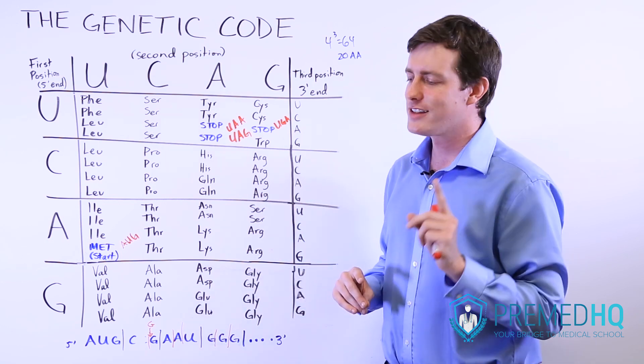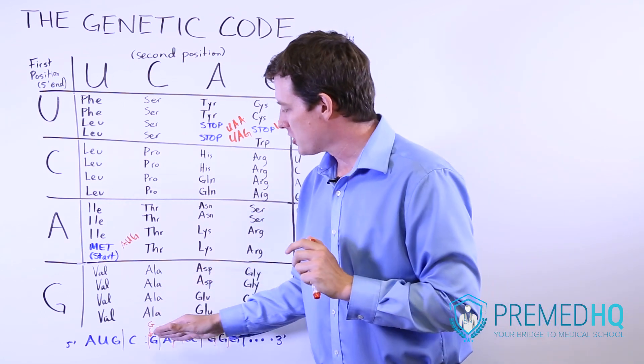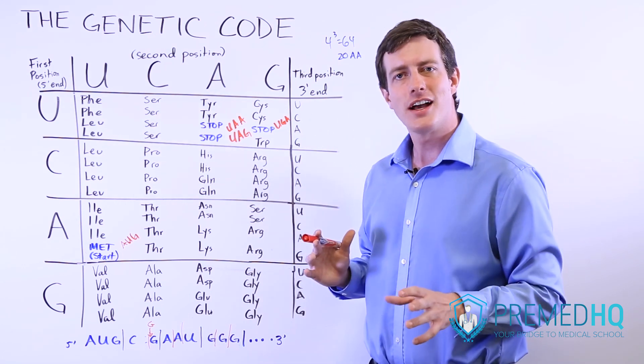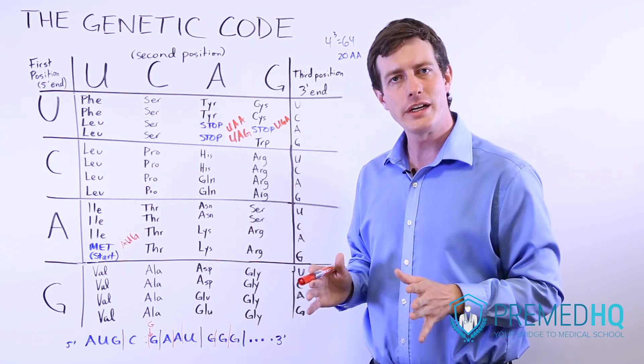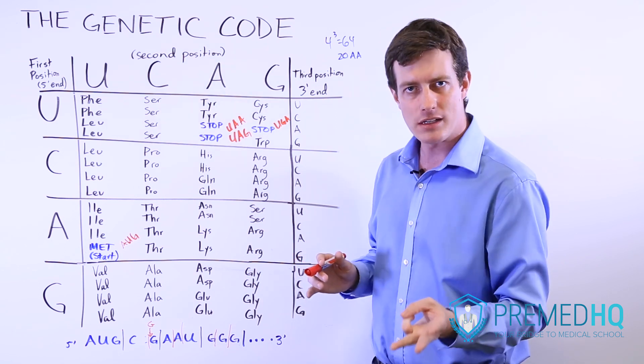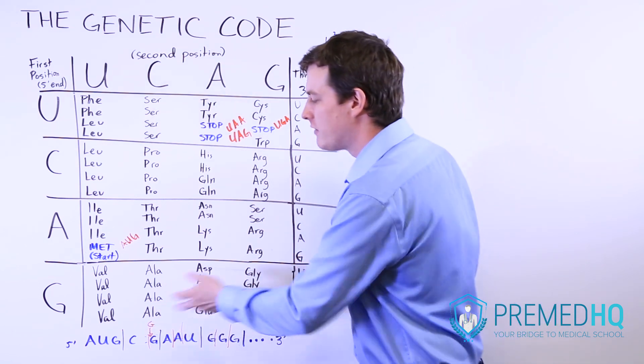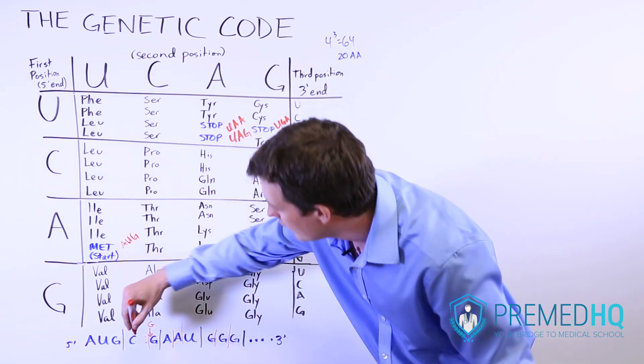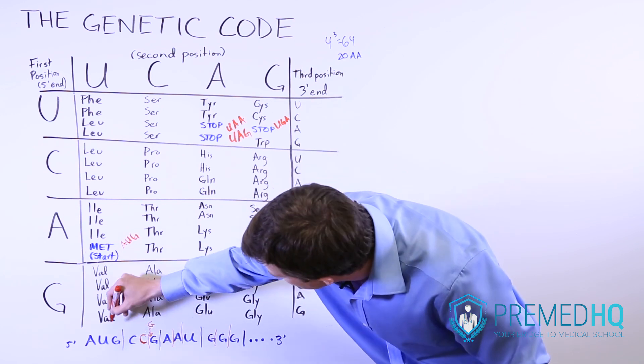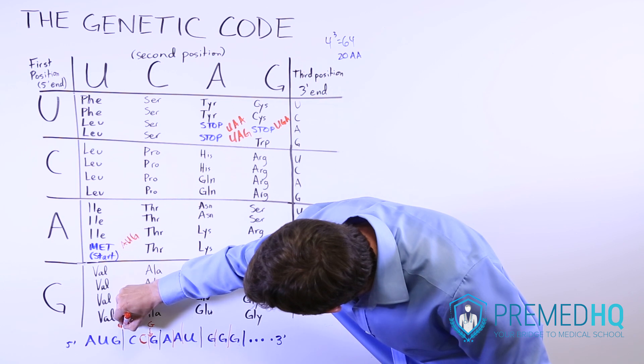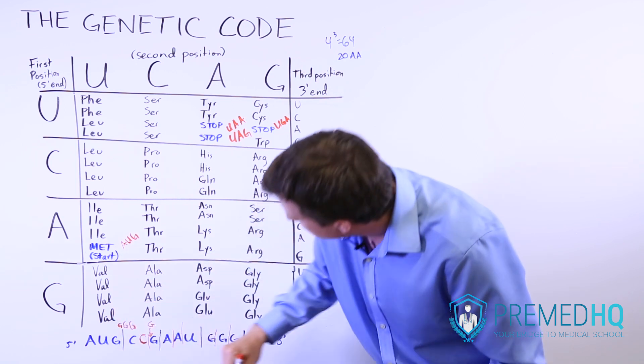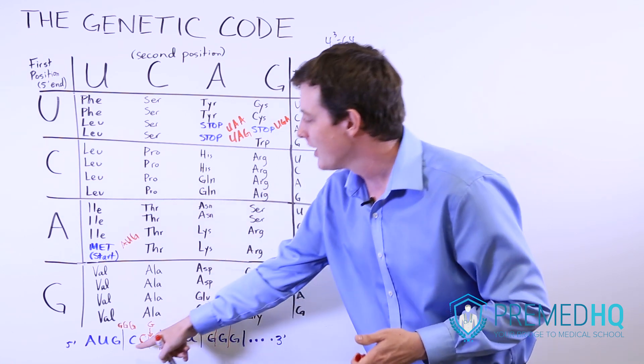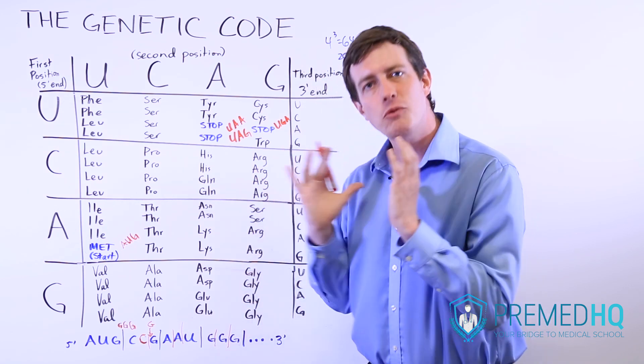Now there is one case where a frameshift mutation, either an addition or a deletion, will not have as significant an effect. And that is if it happens in quantities of three. If you're going to add three bases, then yes, you're going to shift the reading frame down by one, but the identity of all of these, it will still have AAU grouped together. So let's just restore this CCG here, and let's just say that we inserted another GGG. This is an interesting case, because we're going to have one more amino acid in there, which may or may not have an effect, but we're still going to get the same codons being read within the same frame.